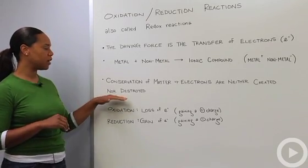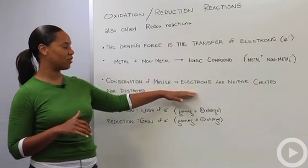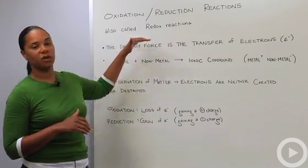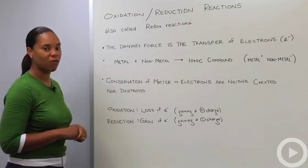So because we know the conservation of matter tells us that electrons are neither created nor destroyed, that means that in a redox reaction oxidation and reduction must be coupled so you cannot have one without the other.